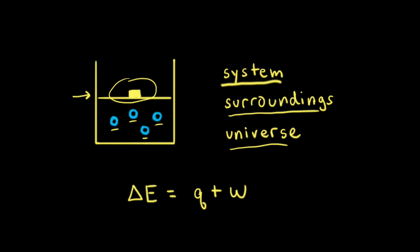Next, let's look at the first law of thermodynamics, which can be summarized by writing delta E is equal to Q plus W. Delta E is the change in the internal energy of the system, and the internal energy refers to the sum of all the kinetic and potential energies of the components of the system. Since we have a monatomic gas, we only have kinetic energy. So if you could imagine adding up the kinetic energy for each particle, the sum of those kinetic energies would be equal to the internal energy of the system.